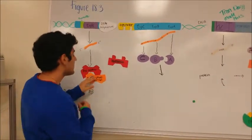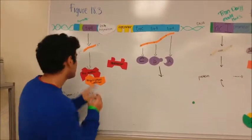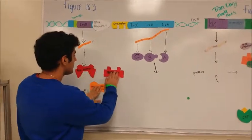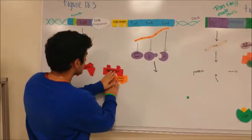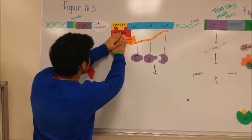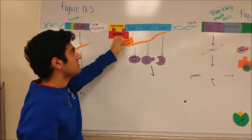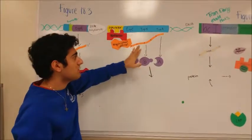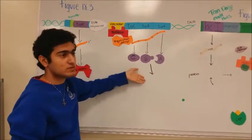When it binds, it's allosteric, so it changes its shape and becomes this. This activated repressor goes and binds to the operator region, basically hindering RNA polymerase from continuing to transcribe from these genes an mRNA sequence, which ultimately leads to no tryptophan production.